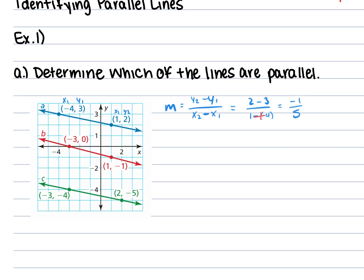Now we do the same thing for the second line — label x1, y1, x2, y2 and plug in everything. So negative 1 minus 0 over 1 minus negative 3. Negative 1 minus 0 is negative 1, and 1 minus negative 3 turns into 1 plus 3, which is 4. So far we have negative 1 over 5 and negative 1 over 4. These are not the same, so these two are not parallel.